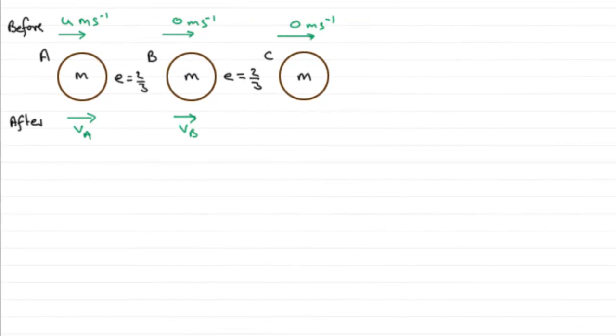Okay, so for this particular question you're going to need to draw a diagram, and I would suggest it looks something along these kind of lines where we have got our three particles A, B, and C, each having a mass of m.